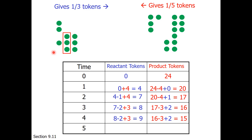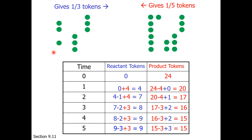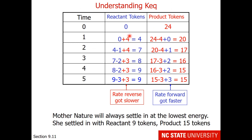One third of 9 is 3, and one fifth of 15 is also 3. We do our exchange of 3 forward and 3 reverse — once again we are at equilibrium. We can continue exchanging forward and reverse, and the ratio will still be 9 to 15. The reverse rate started out high and slowed down; the forward rate started low and sped up until we reached equilibrium at 9 to 15.